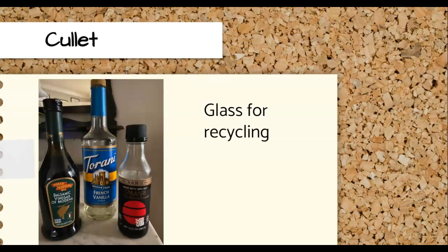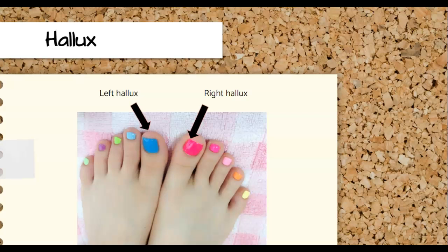Mom picked up that big full bin of cullet, and as she was walking through the house to get it to the curb, all of a sudden you hear an "ow" and a crash. She stubbed her left hallux. If you look at the picture, is his mom's left hallux painted pink or blue? Blue, yes. The hallux is the big toe. If you would take a moment and draw a foot with an arrow pointing at a big toe, I can look at your drawing and say, oh my goodness, you drew a nice hallux. Do you have color on your hallux?